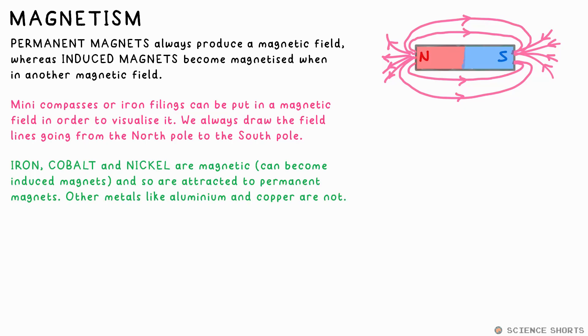An induced magnet is a material, usually a metal, whose particles align temporarily when it's placed in a magnetic field, so it makes its own magnetic field. That's why an iron nail can be attracted to either the North or South Pole of a permanent magnet when placed near it. So we say iron is magnetic, but it is not a magnet.